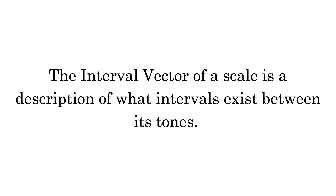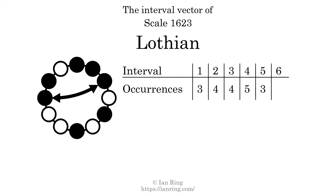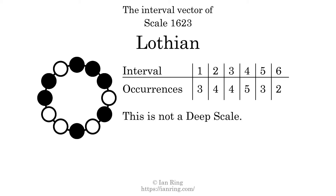The interval vector of a scale is a description of what intervals exist between its tones. There are 3 intervals with the size of 1 semitone, 4 intervals with the size of 2 semitones, 4 intervals with the size of 3 semitones, 5 intervals with the size of 4 semitones, 3 intervals with the size of 5 semitones, and 2 intervals with the size of 6 semitones. Each interval does not appear in this scale a unique number of times, so this is not a deep scale.